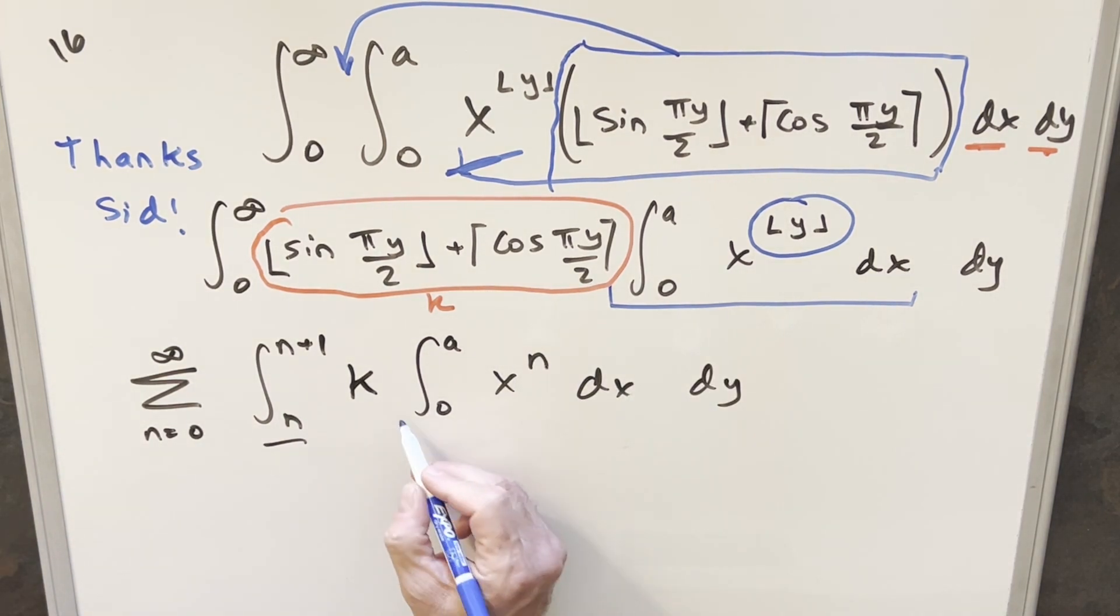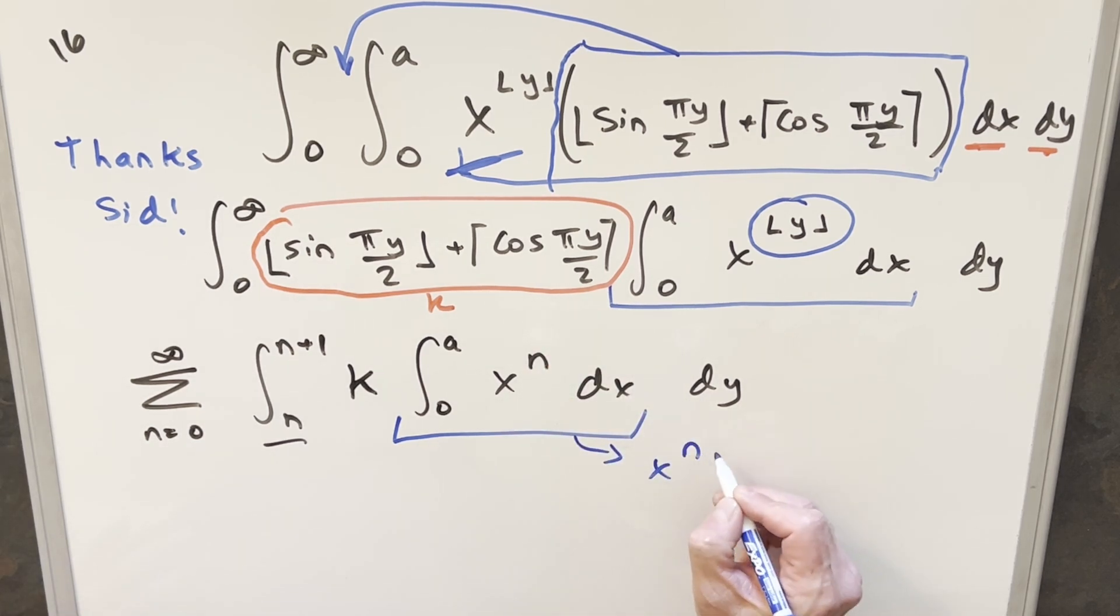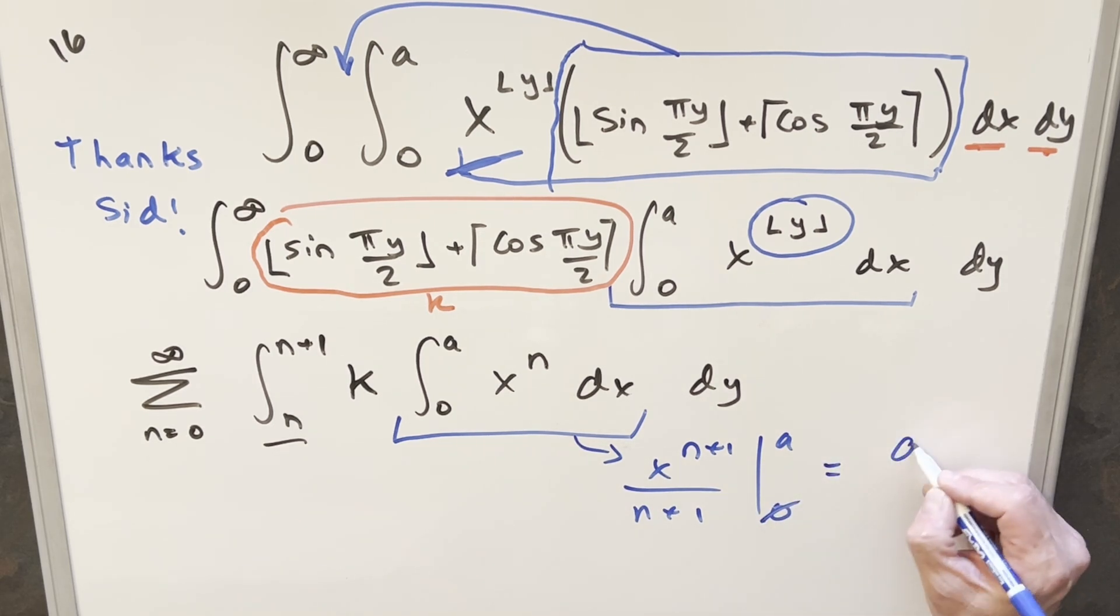But what that's going to allow me to do is now I can actually just do this integral. This is just going to be power, and it's just a constant. So when we integrate this, this is going to be just x to the n plus one over n plus one, and we're evaluating from zero to a. When we plug in zero, it's going to be nothing. So we just need to plug in a, and this whole thing is going to become a to the n plus one over n plus one.